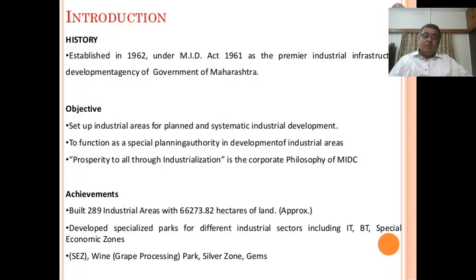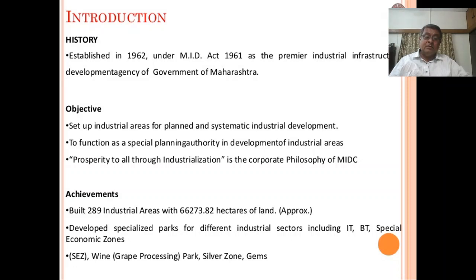MIDC has built nearly 289 industrial areas on around 66,273.82 hectares of land. It has developed specialized parks for different industrial sectors including IT, BT, Special Economic Zones, wine grape processing parks, silver zones, and gems.